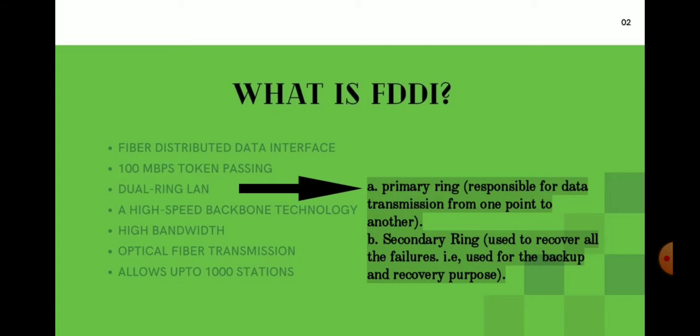The dual ring consists of a primary ring and a secondary ring. The primary ring is responsible for data transmission at speeds up to 100 Mbps, while the secondary ring is used for backup and recovery purposes. FDDI supports up to 1000 nodes or stations and has become the backbone of wide area networks.